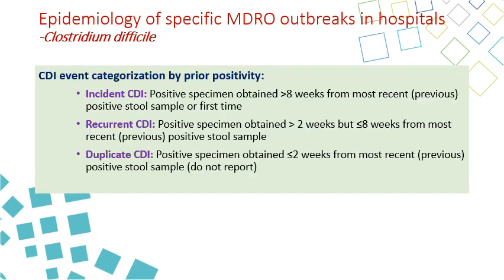C. difficile cases can be categorized by onset type. An incident case is a positive test in a patient with no prior positive in the last two weeks. If there was a previous positive between two and eight weeks ago, it is classified as recurrence. If a positive test occurs within the last two weeks, it is considered a duplicate CDI and not a new infection.